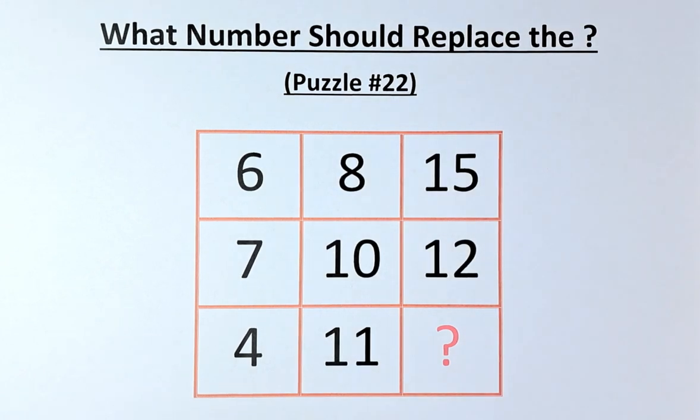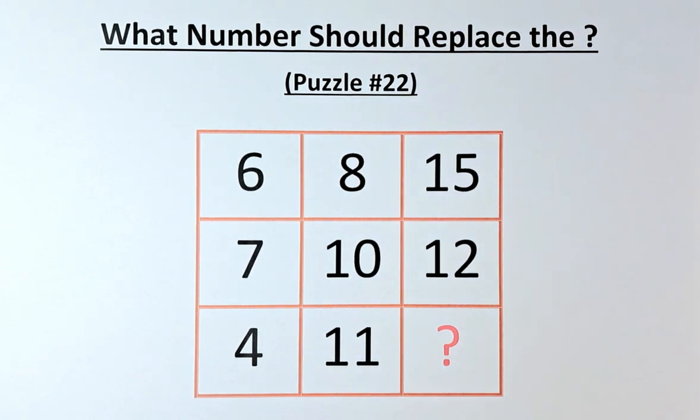So 6, 8, 15 - it doesn't mean that 6 and 8 have to give you 15, or 7, 10 equal to 12. The trick is, this is an easy question if you can get it.